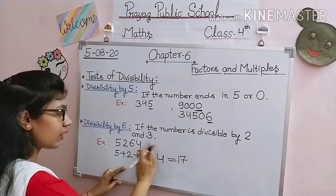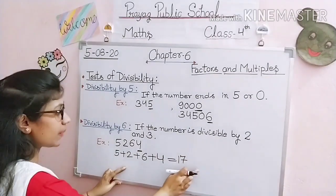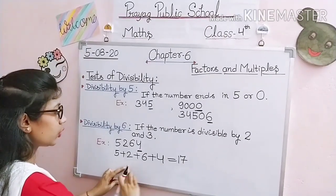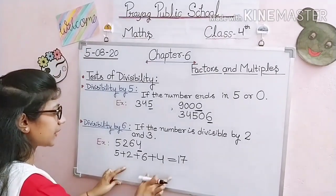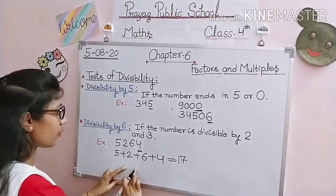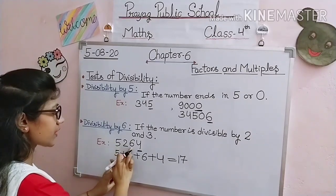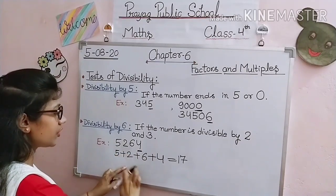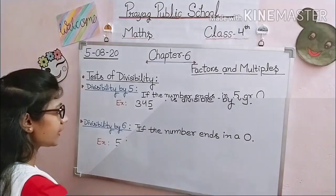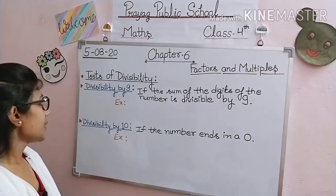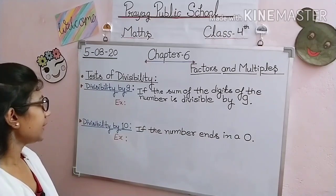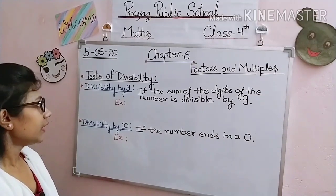5,264 is divisible only by 2 and not divisible by 3. So what do we conclude? Therefore, 5,264 is not divisible by 6.